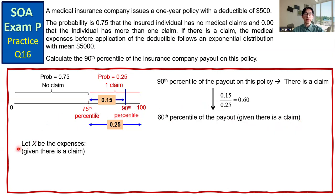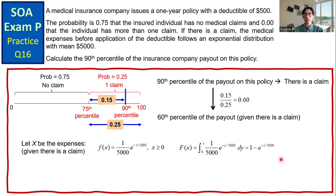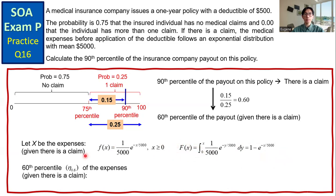The expenses given that there is a claim follow an exponential distribution with mean 5,000. So we have the pdf of x: (1/5000) * e^(−x/5000), and the cdf of x is 1 − e^(−x/5000). To get the 60th percentile, we set the cdf equal to 0.6 and solve for the value at the 60th percentile, giving us $4,581.45.